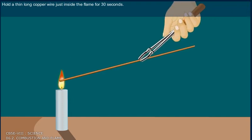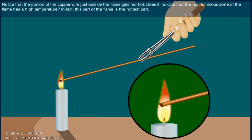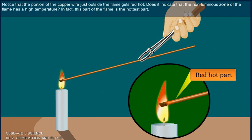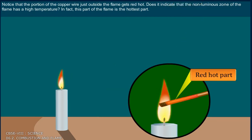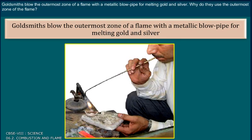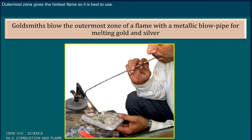Hold a thin long copper wire just inside the flame for 30 seconds. Notice that the portion of the copper wire just outside the flame gets red hot. This indicates that the non-luminous zone of the flame has a high temperature — in fact, this part of the flame is the hottest part. Goldsmiths blow the outermost zone of the flame with a metallic blowpipe for melting gold and silver, because the outermost zone gives the hottest flame, so it is best for this use.